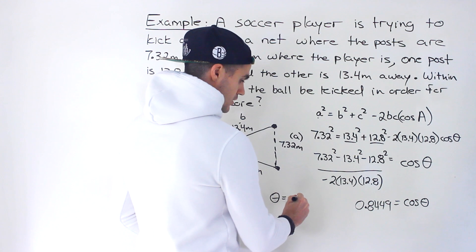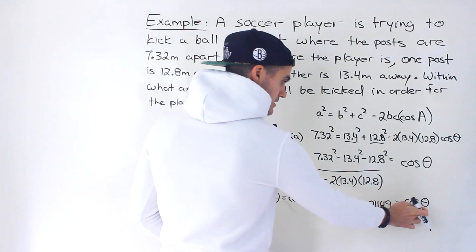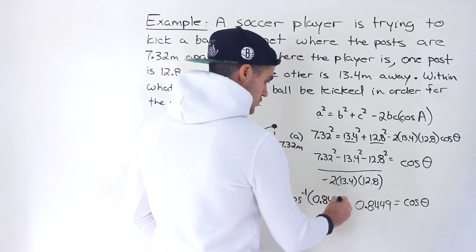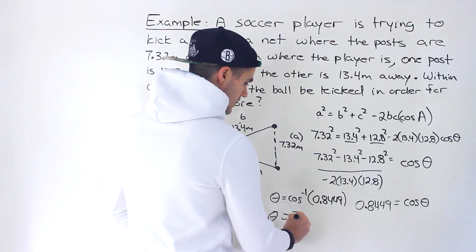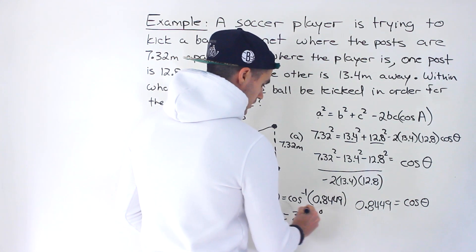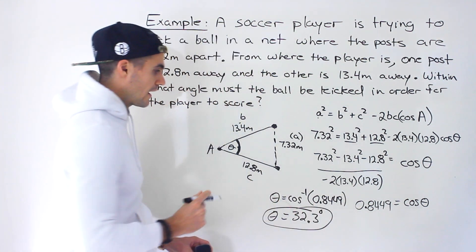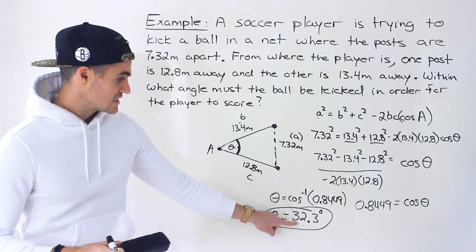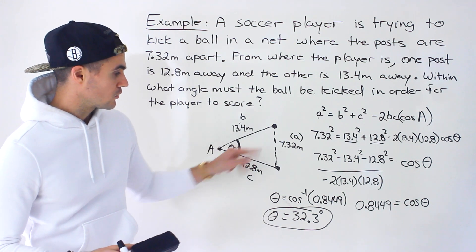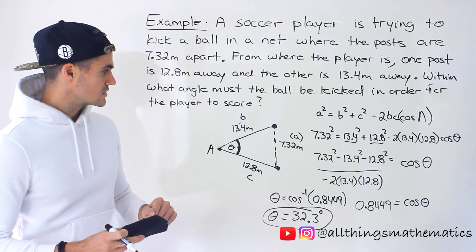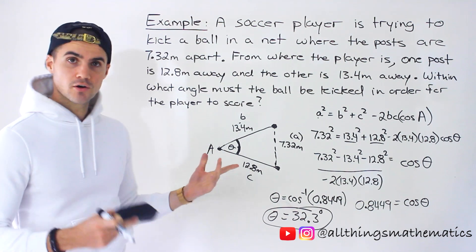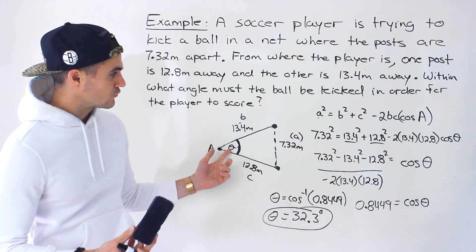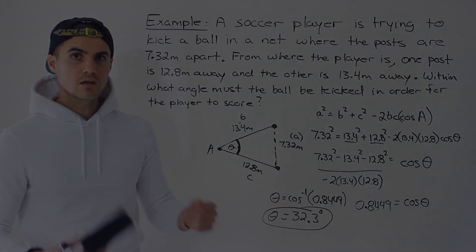To isolate θ, we take the inverse cosine of 0.8449, which gives approximately 32.3 degrees. So the final answer is that the ball must be kicked within an angle of about 32.3 degrees for the player to score. The toughest part is just setting up the diagram — once you understand what's going on, you're dealing with a regular triangle and solving for the angle using the cosine law.